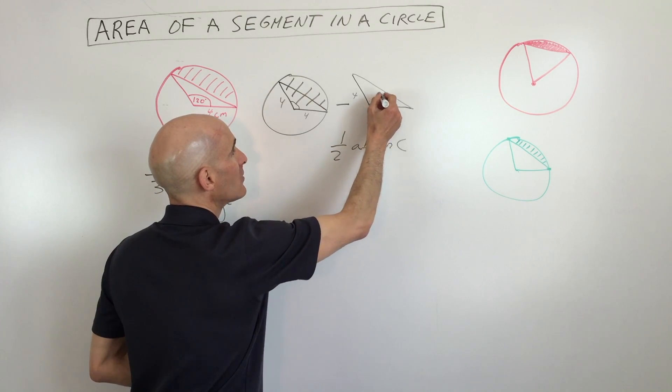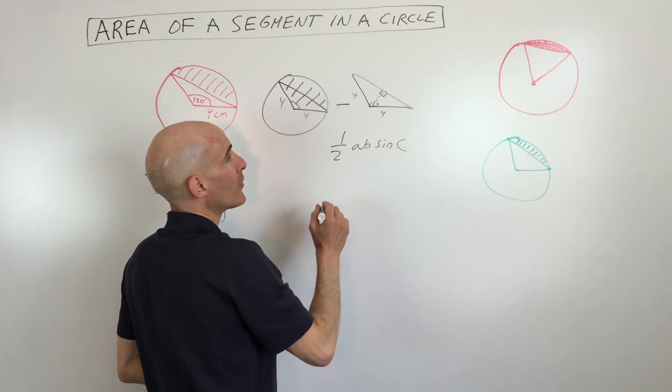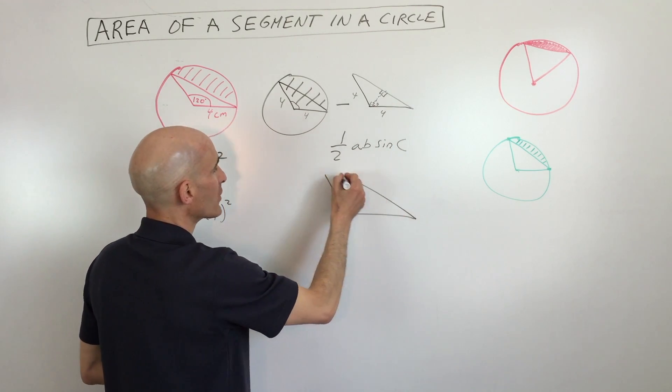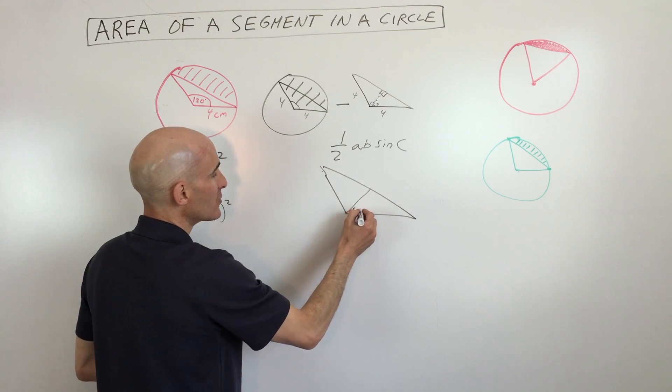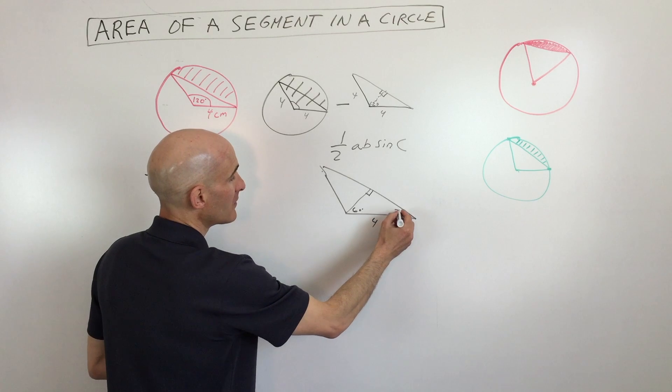Into two triangles. So what I'm doing is I'm dropping a perpendicular like so. Now what I have is—let me see if I can blow this up here a little bit larger for us.